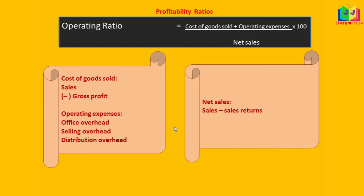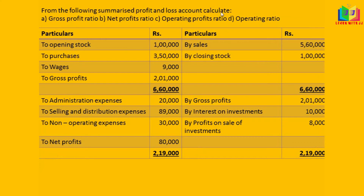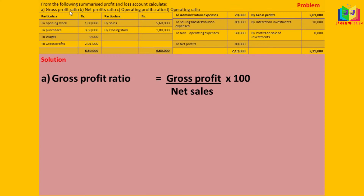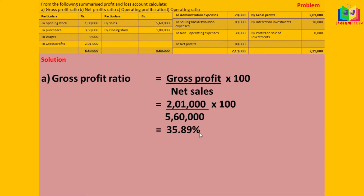Let us see one problem. From the following summarized profit and loss account, calculate gross profit ratio, net profit ratio, operating profit ratio, and operating ratio. The trading and profit and loss account is given. For gross profit ratio — formula is gross profit divided by net sales into 100. Gross profit is 2,01,000 and net sales is 5,60,000 (since there are no sales returns, sales equals net sales). Substituting in the formula, we get 35.89%.